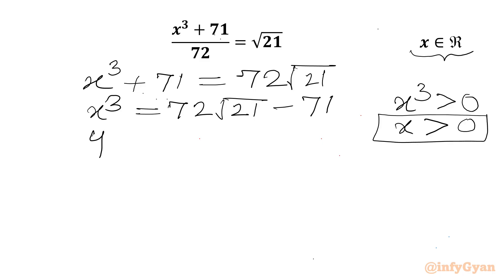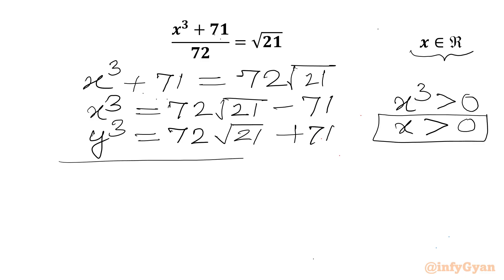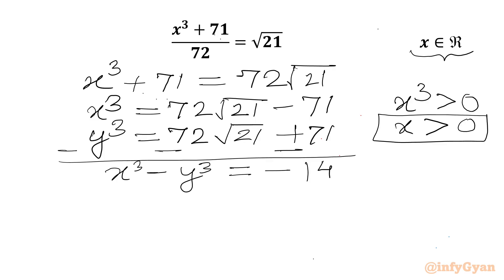Let us assume y³, which will be the conjugate of x³, so y³ = 72√21 + 71. Now subtract the second equation from the first one, so we can write x³ minus y³ equal to negative 142. Let us call this equation 1. Now we will multiply these two equations.